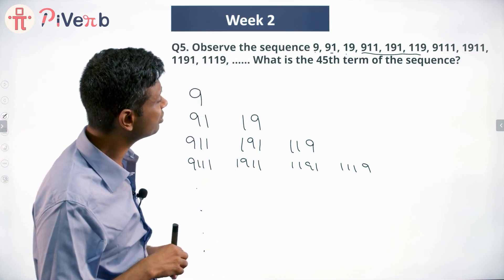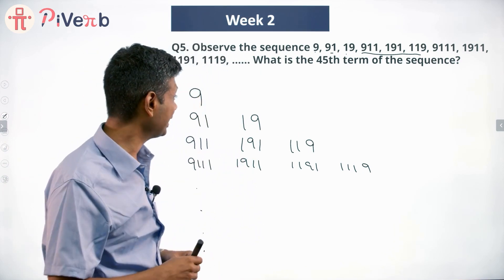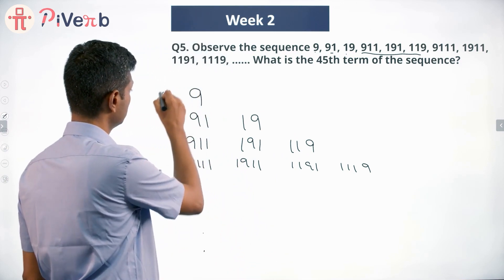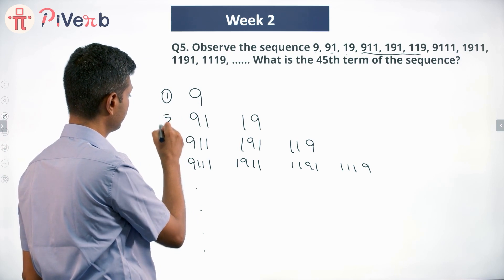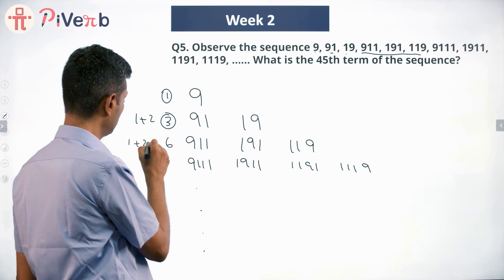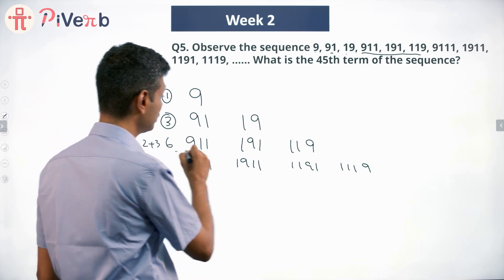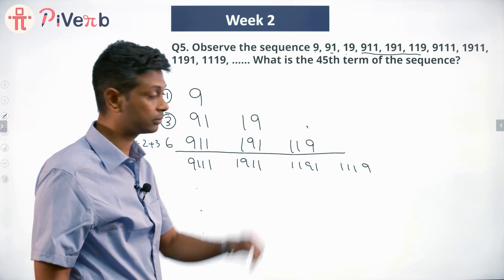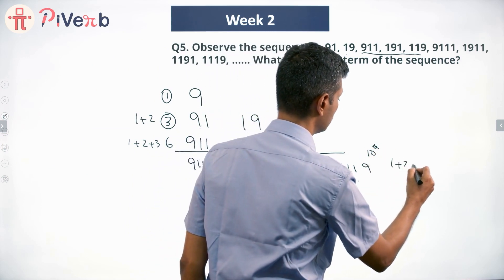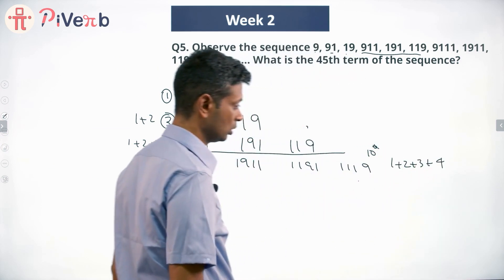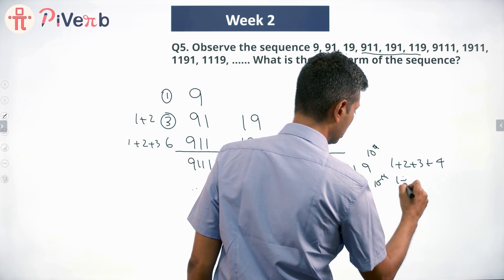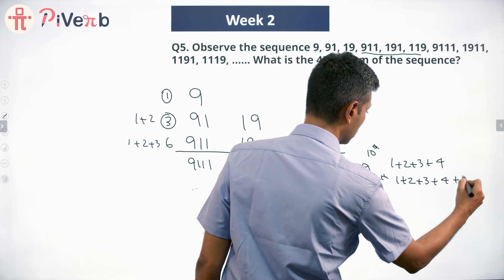We want to find the 45th term of this sequence. For questions like these, I like counting the cumulative total at the end of each row. End of row 1: 1 number. End of row 2: 1 plus 2 equals 3. End of row 3: 1 plus 2 plus 3 equals 6. End of row 4: 10. End of row 5: 15. These are the running totals.